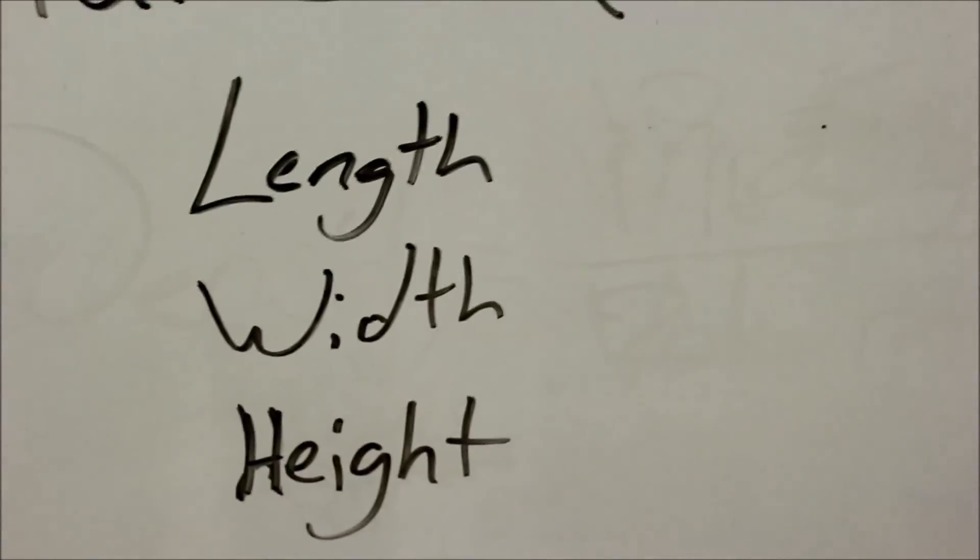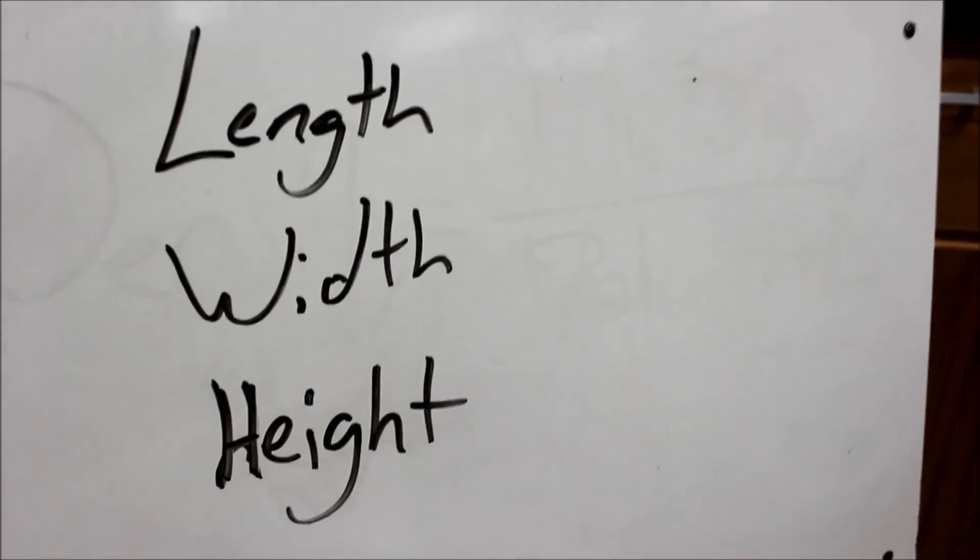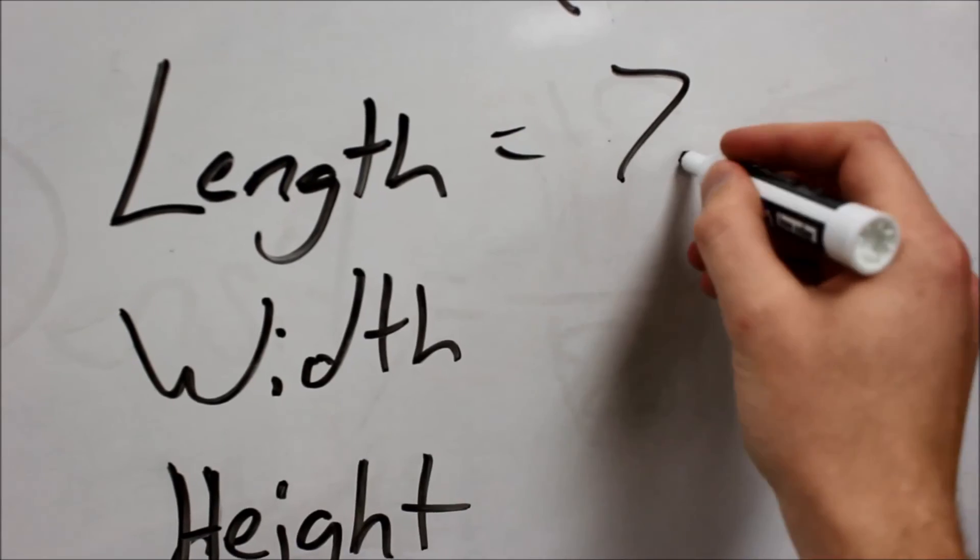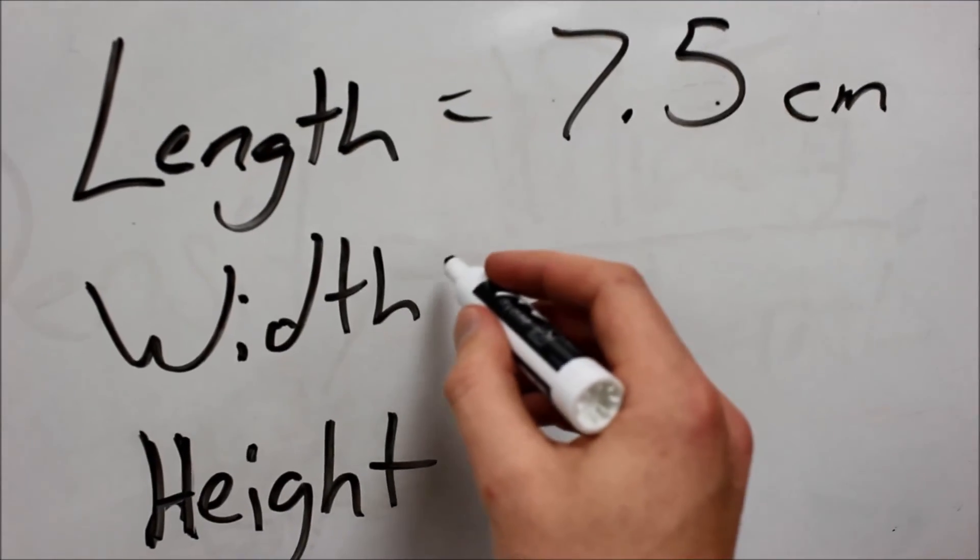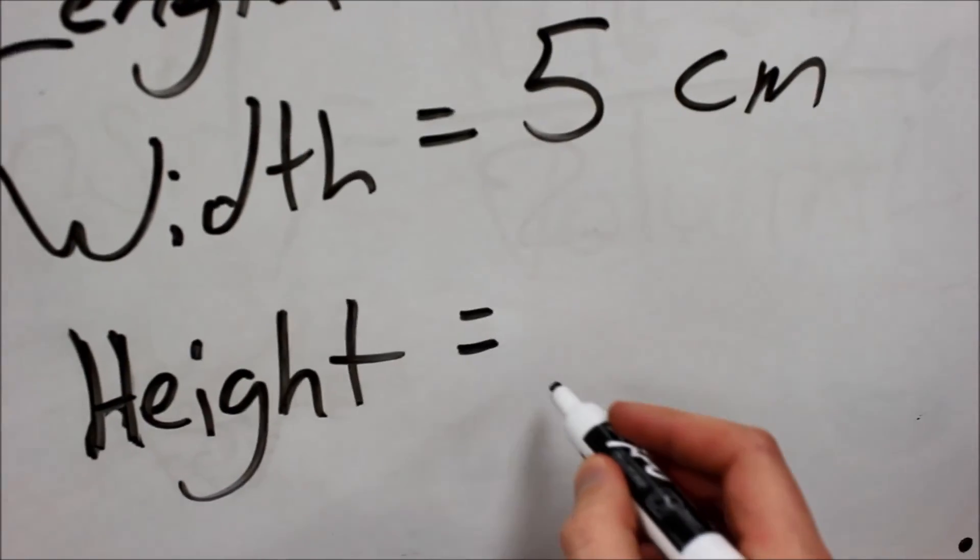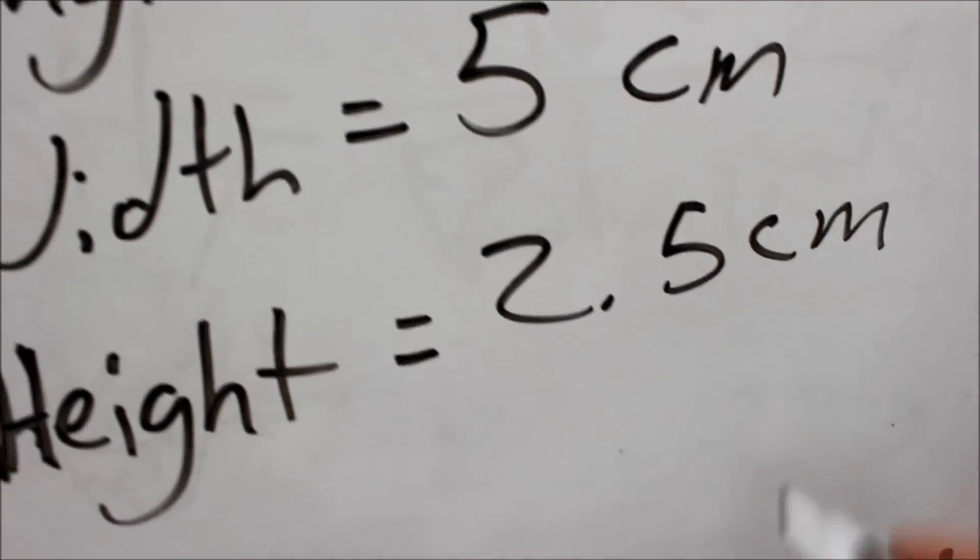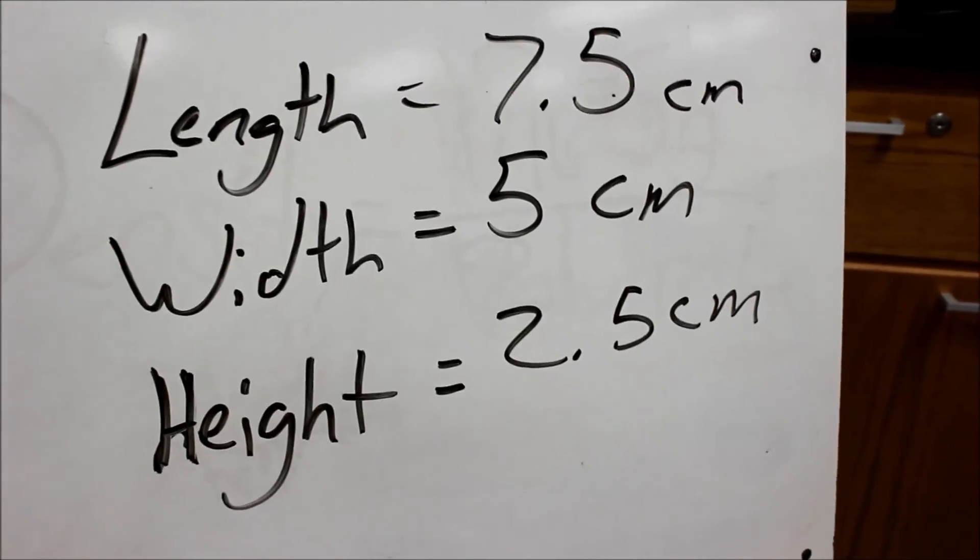So we have over here, the length was 7.5 centimeters. The width was 5 centimeters. And the height was 2.5 centimeters. Now what I would have to do is just multiply these three together.